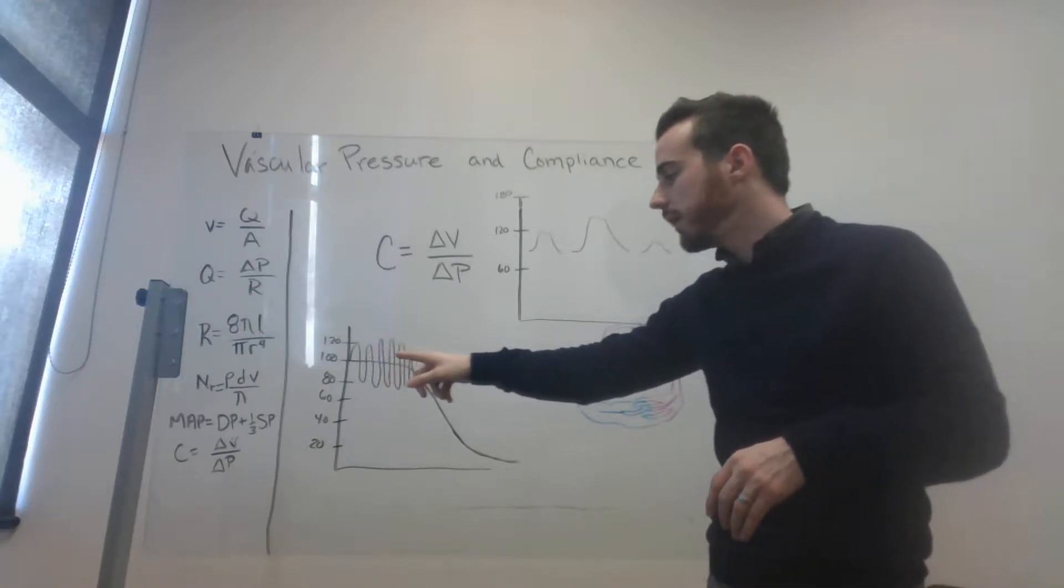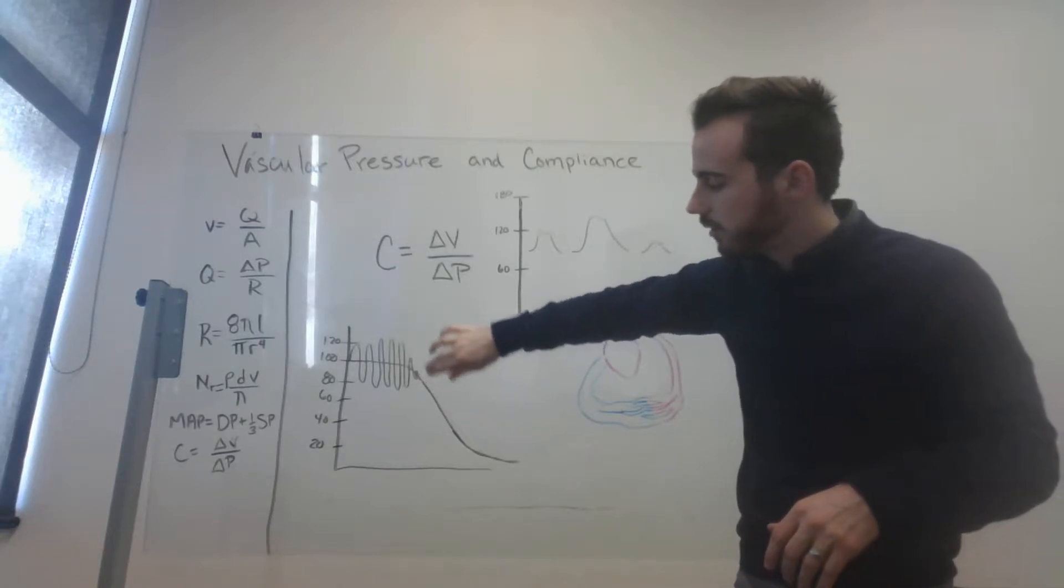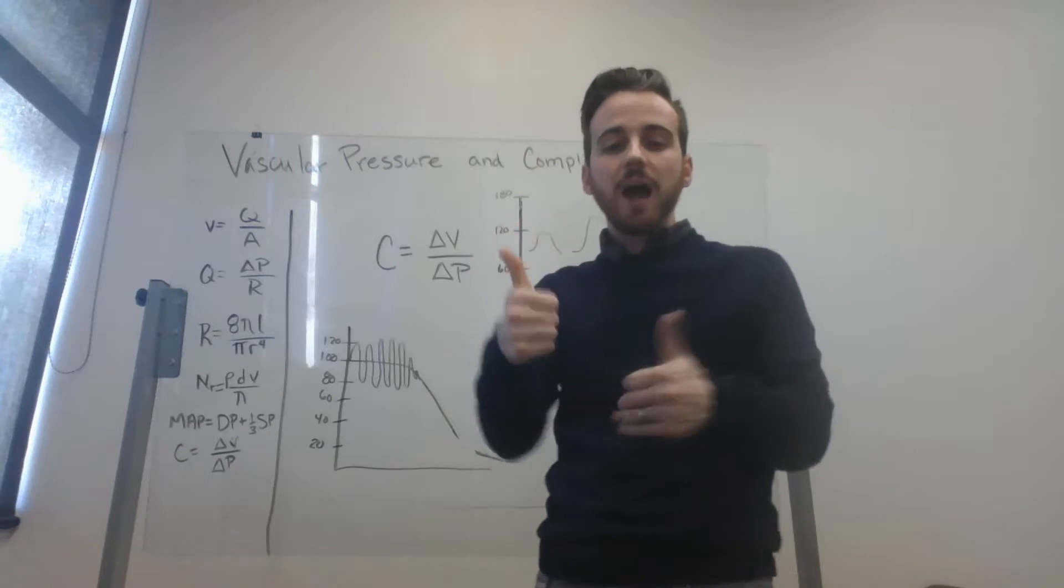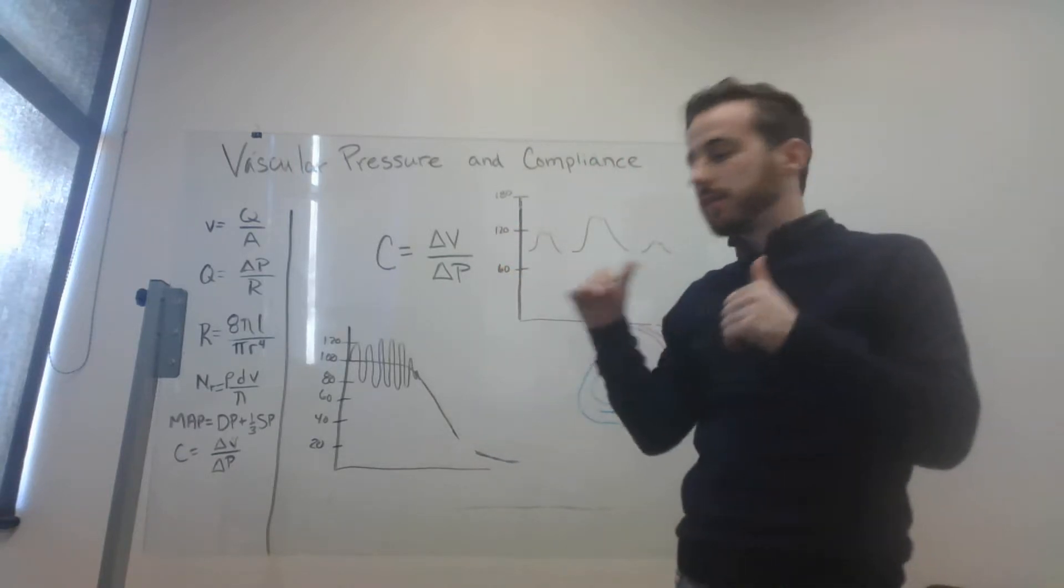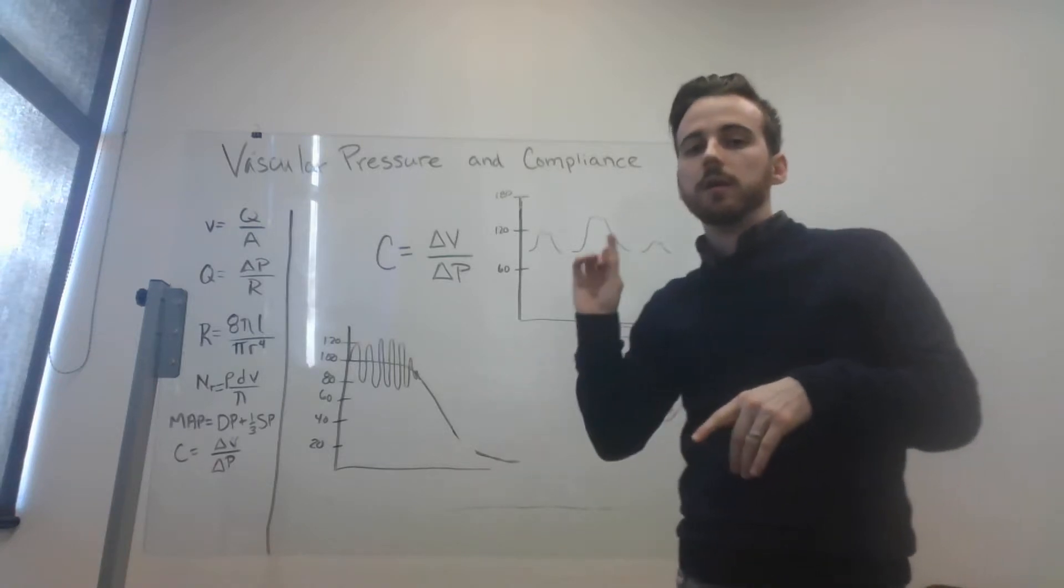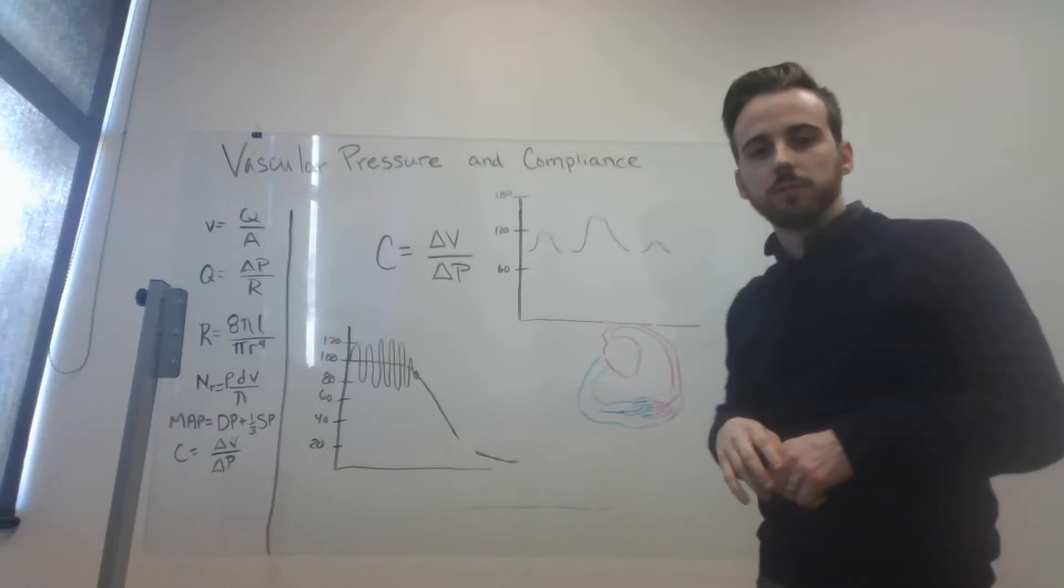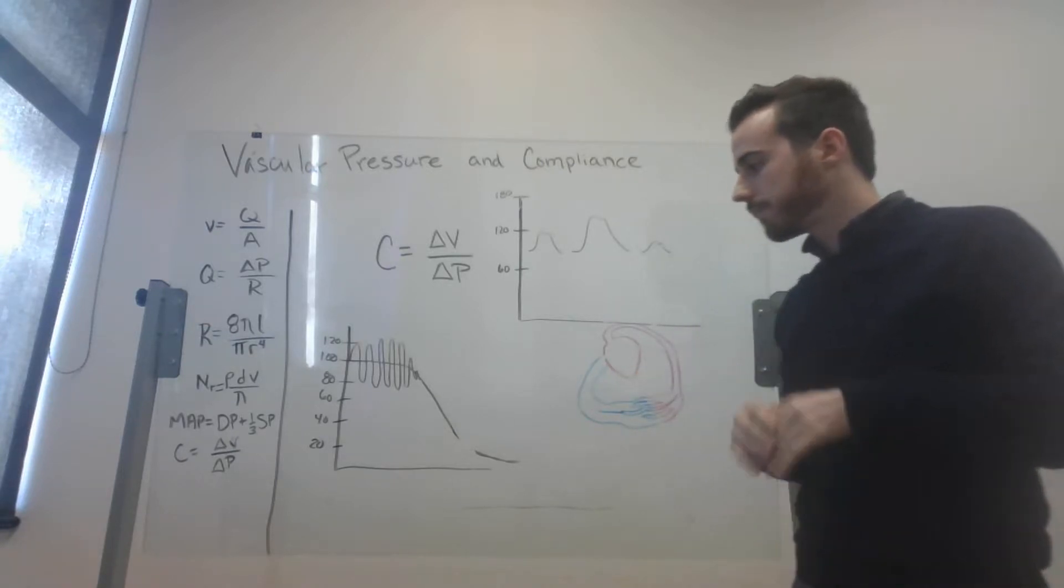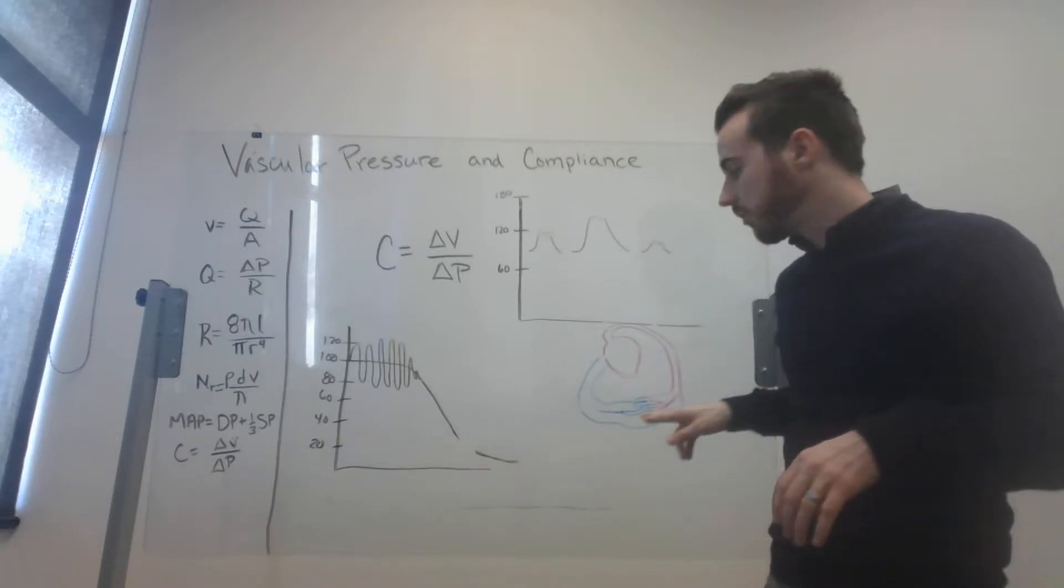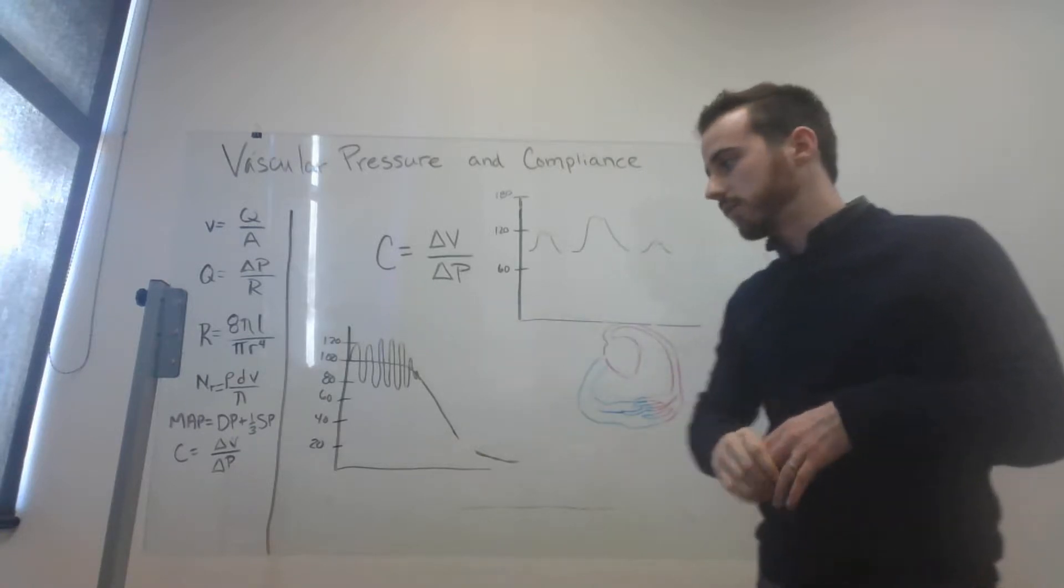And then when we get here, these are actually arterioles right here, this huge drop-off. Our arterioles have high resistance, which means that they actually can cause the pressure to decrease dramatically. And that's pretty important because we don't want incredibly high pressures to be in our venous structures. Our venous structures don't have the pulse also because of this concept of compliance that we'll talk about in a minute.